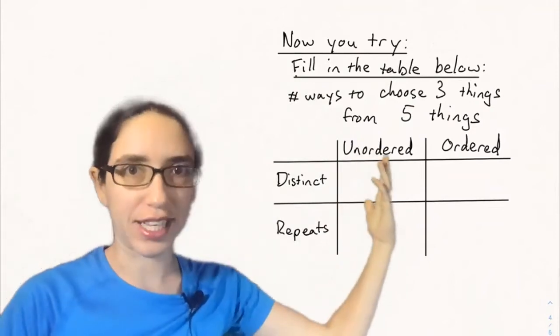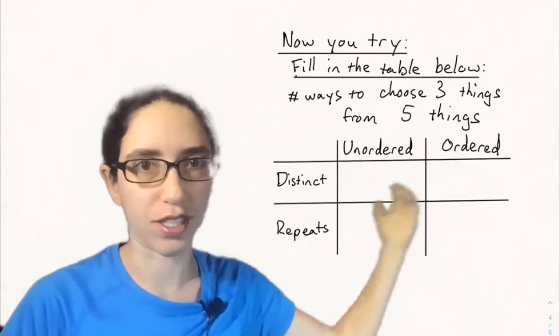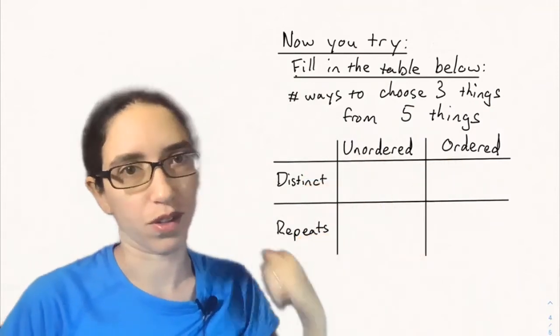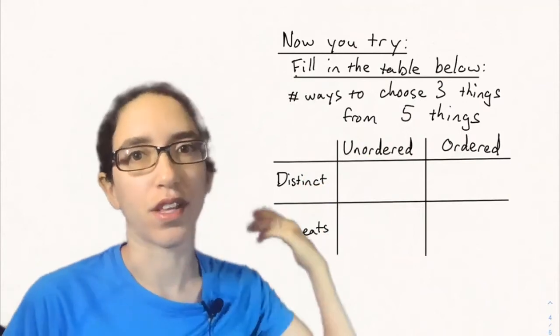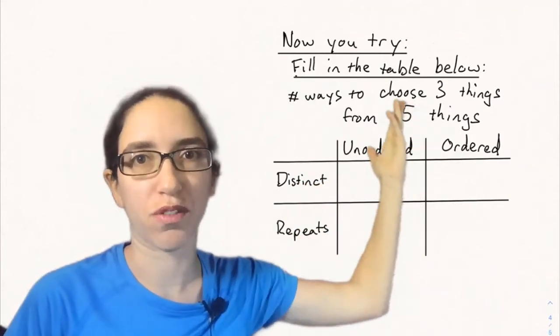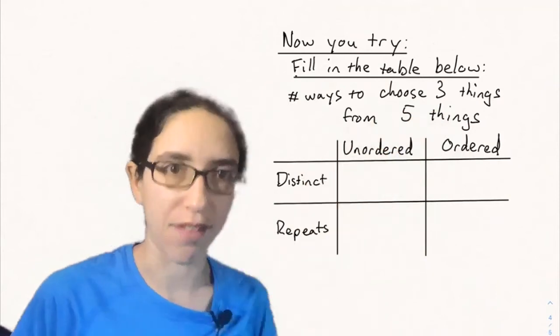So now you try. Make sure you understand the distinction between order matters and order doesn't and distinct or repeats allowed. So then try it for the number of ways to choose three things from five things.